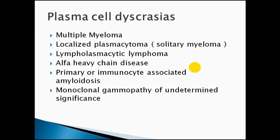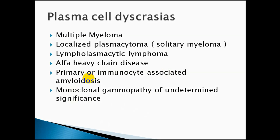Alpha heavy chain disease: as we know, a regular antibody is made of two types of chains — heavy chains and light chains. When you have elevated levels of heavy chain only, you get alpha heavy chain disease. Primary or immunocyte-associated amyloidosis is a condition involving accumulation of protein. The primary type results from overproduction of the light chain, which accumulates in tissue, causing amyloidosis.